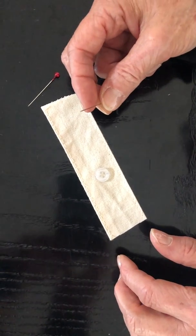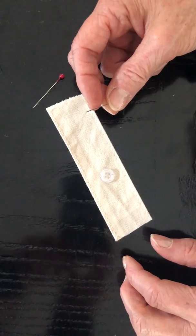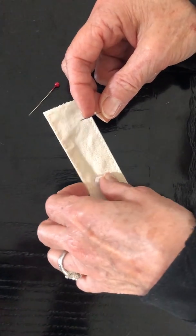The next thing I'm going to demonstrate is how to sew on a button. This might come in handy if a button falls off.